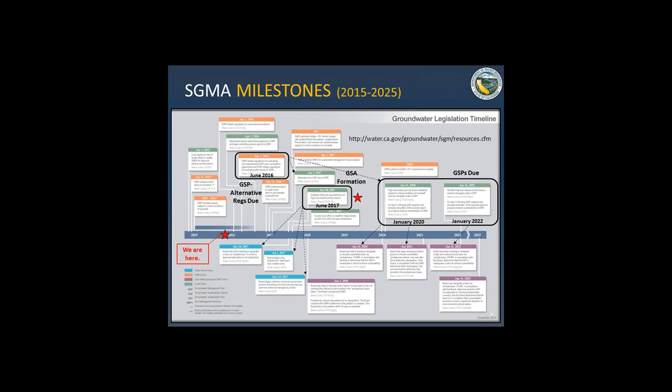GSAs are due to be formed by June 30th of 2017. That box is right in the middle with the red star. If those GSAs are not formed by that date, you can see where three arrows go down to State Board responsibilities — that has to do with coming up with a schedule for assessing fees and some responsibilities the State Board has to start going down the probationary basin status for areas within a basin that don't have their GSAs formalized by that date.